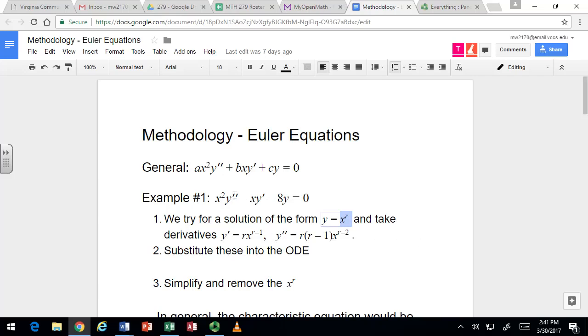So when you see this pattern, where you can have constants in front, but it's got to have x squared times the second derivative and x times the first derivative and just a constant times the function itself, all adding to zero, you can try this out.